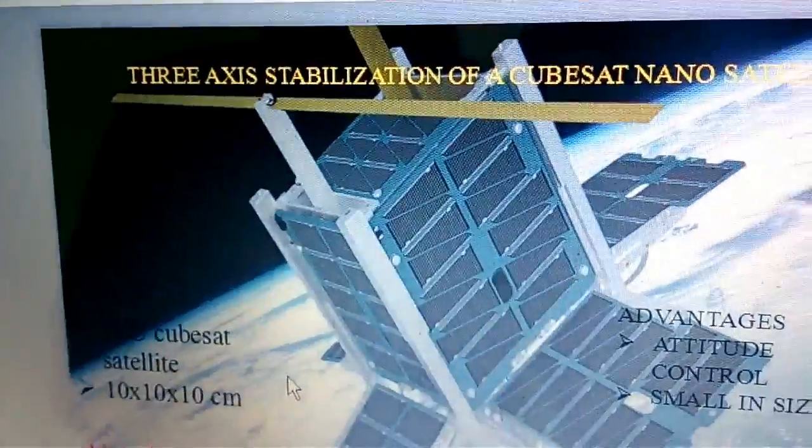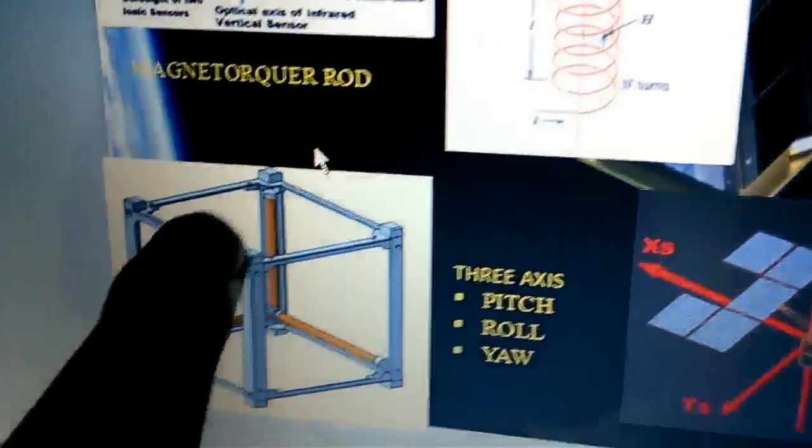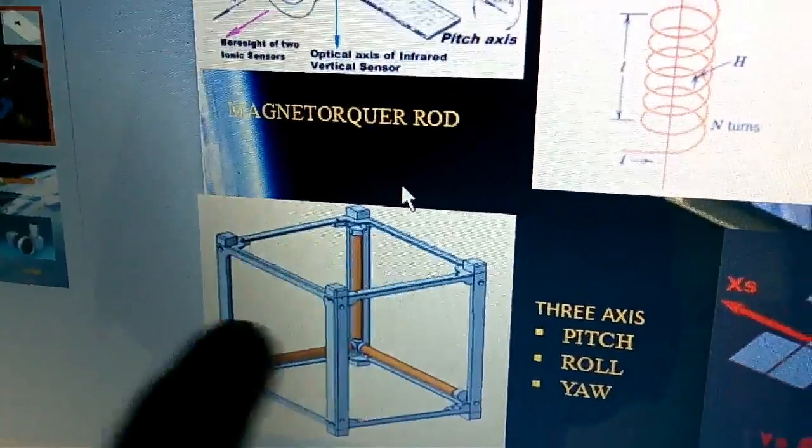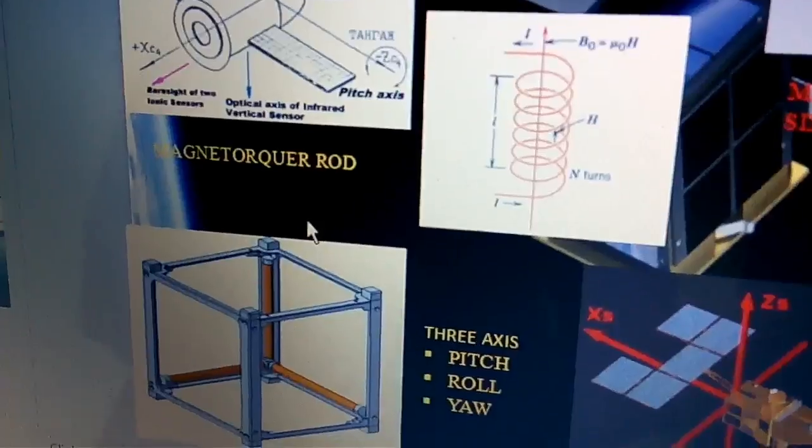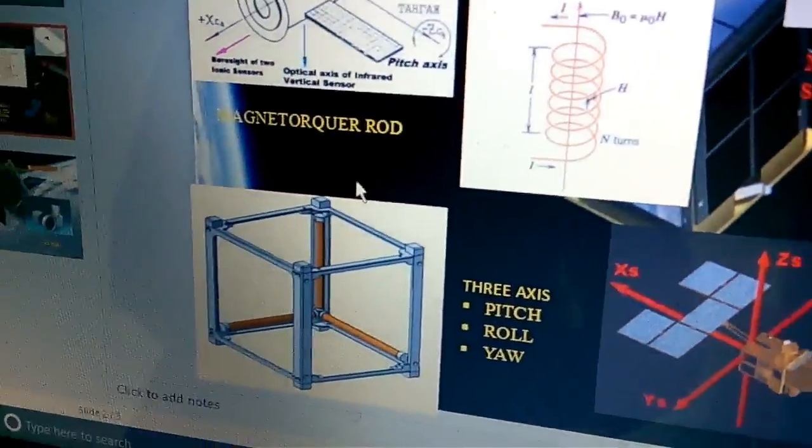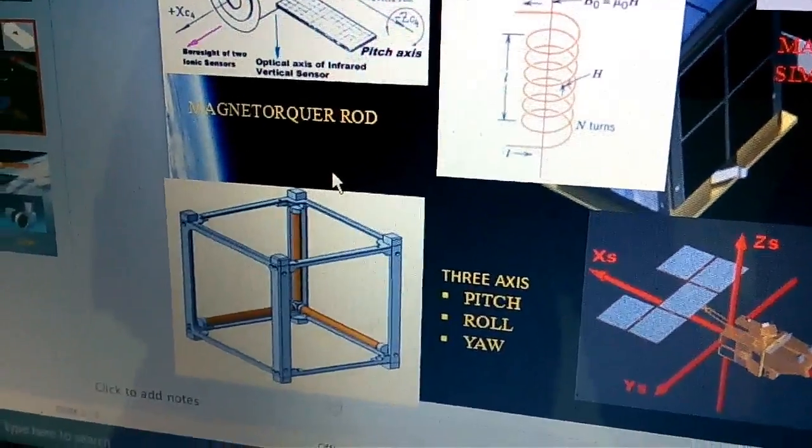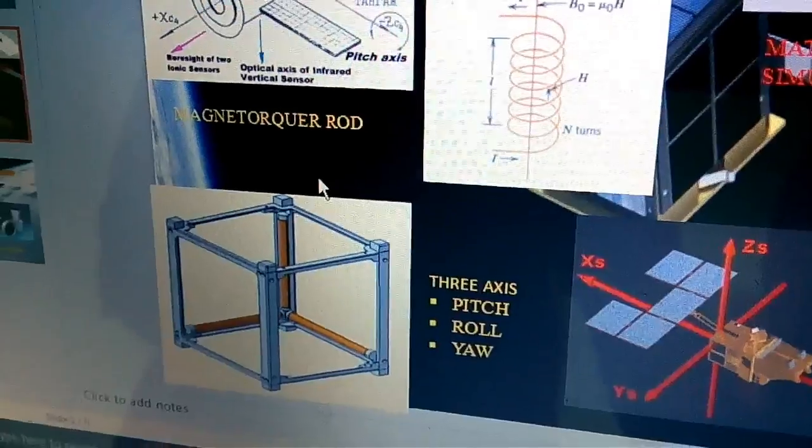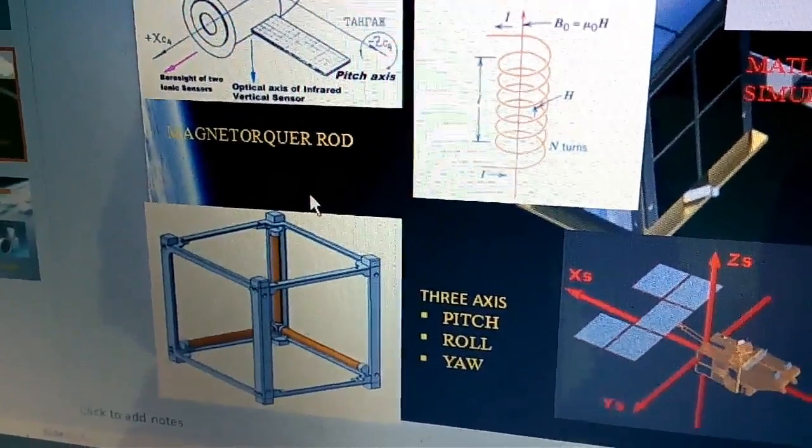Further, we are going to design the magnetorquer rods here. You can see these three rods in this prototype of a CubeSat. For the design of those three magnetorquer rods, we need some special type of materials which have high magnetic permeability.